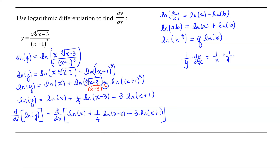The derivative of the natural log of x minus 3 is 1 over the argument of the logarithm times the derivative of that argument. Our argument is x minus 3, and its derivative with respect to x is 1. Then minus 3 times, using the constant multiple rule, the derivative of the natural log of x plus 1 is 1 over x plus 1, times the derivative of x plus 1, which is also 1.